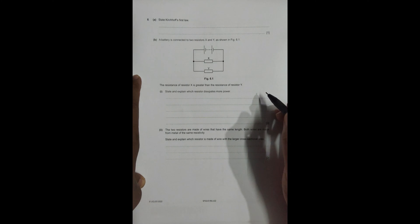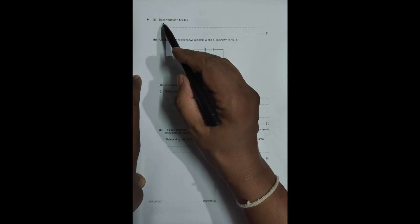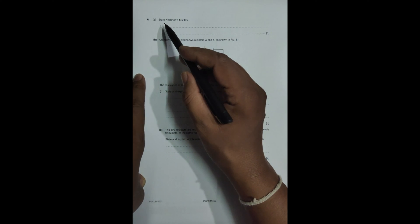Hello folks, this is 2022 May-June Paper 21, question number 6. This question is concerned with the chapter on current electricity. The question starts with stating Kirchhoff's first law, so it is simply about...